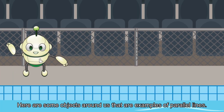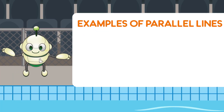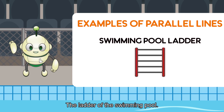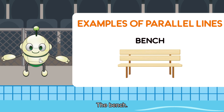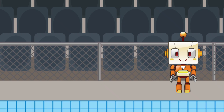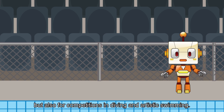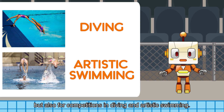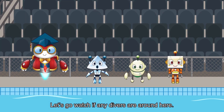Here are some objects around us that are examples of parallel lines: the ladder of the swimming pool, the diving board, the bench, and the rectangle float. The swimming pool is used at the Olympics not only for swimming, but also for competitions in diving and artistic swimming. These are really fun to watch. Let's go watch if any divers are around here.